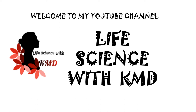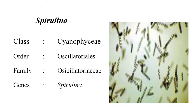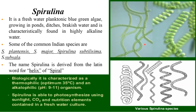Hello everyone, welcome to my YouTube channel Life Science with KMD. Today I am going to explain about cultivation of spirulina. This is the picture of spirulina; it belongs to the class Cyanophyceae. Spirulina is a freshwater planktonic blue-green algae that grows in ponds, ditches, or brackish water and is characteristically found in highly alkaline water. Some of the common Indian species are Spirulina platensis.